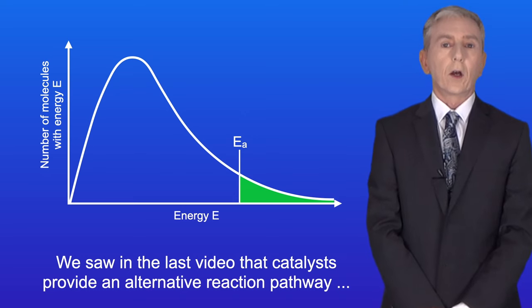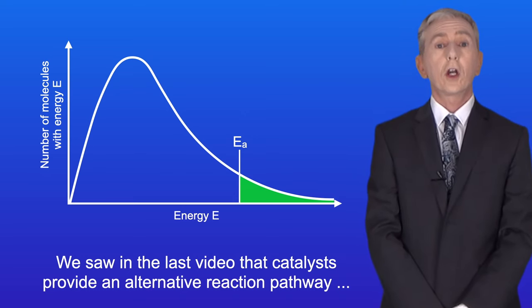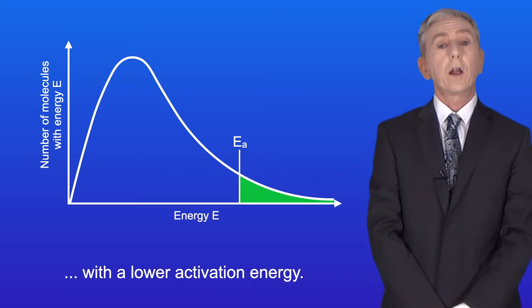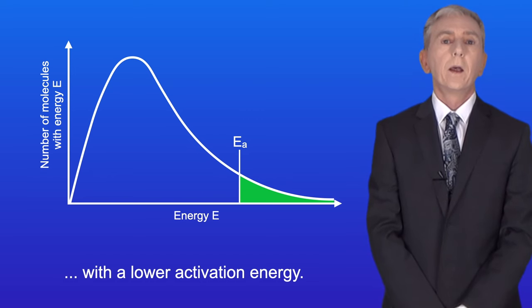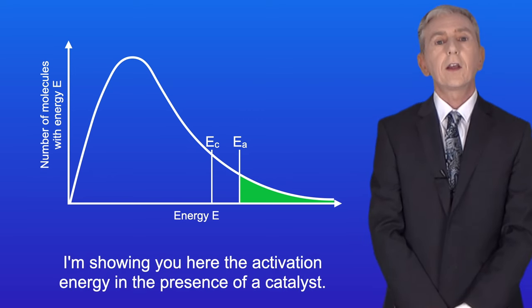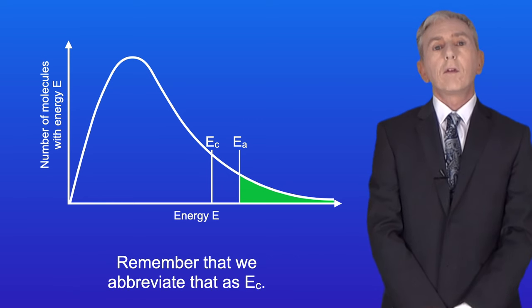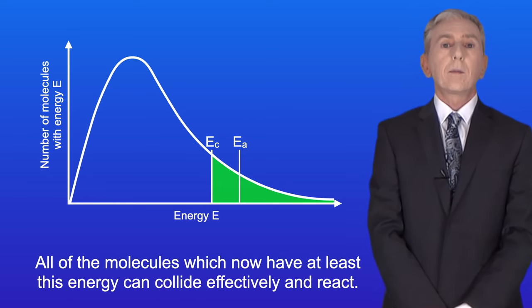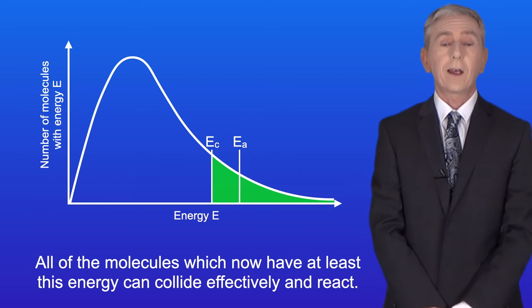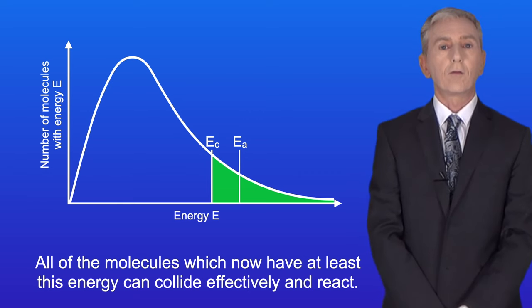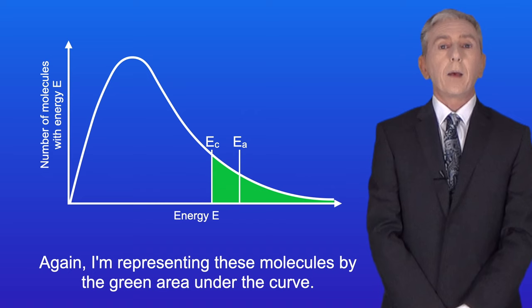Now we saw in the last video that catalysts provide an alternative reaction pathway with a lower activation energy. So I'm showing you here the activation energy in the presence of a catalyst, and remember that we abbreviate that as EC. All of the molecules which now have at least this energy can collide effectively and react, and I'm representing these molecules by the green area under the curve.